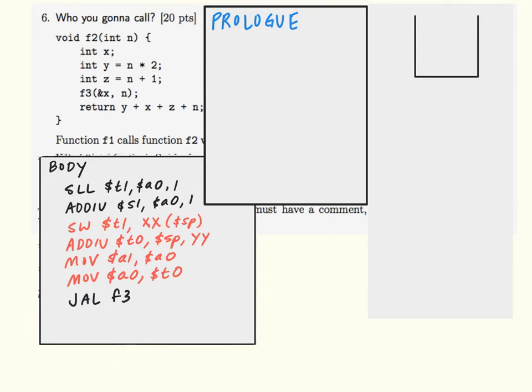After we've completed translating the body of the function into MIPS, we're in a good position to start working on the prologue. Recall that it's in the prologue of F2 where we create F2's stack frame.